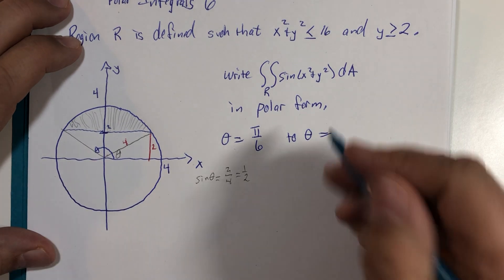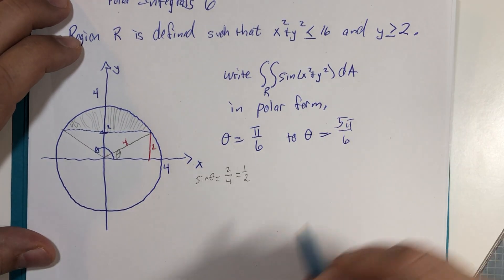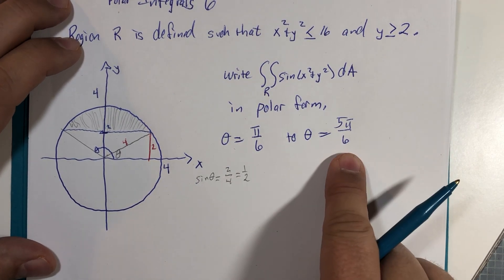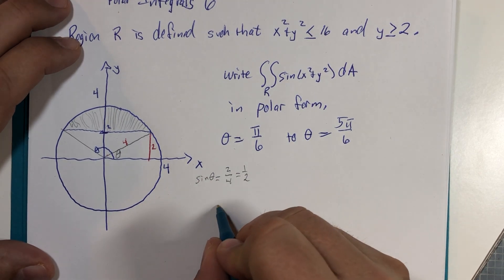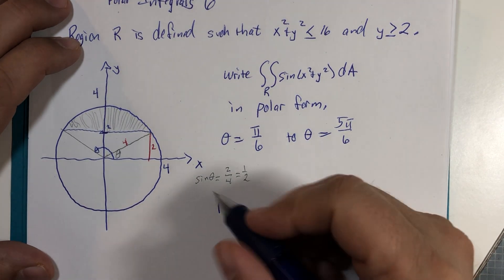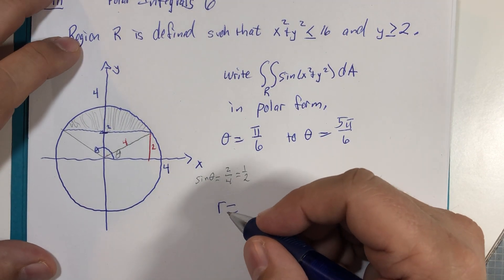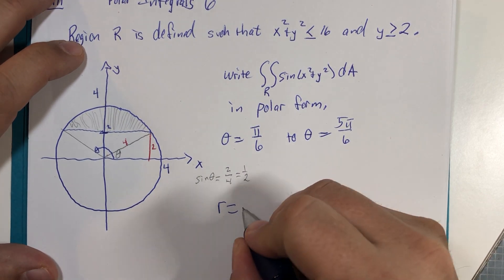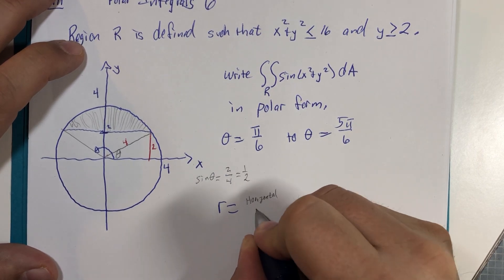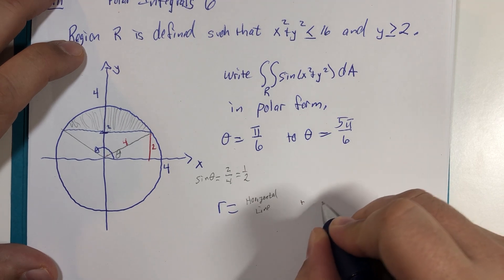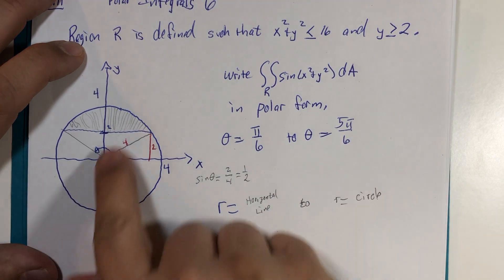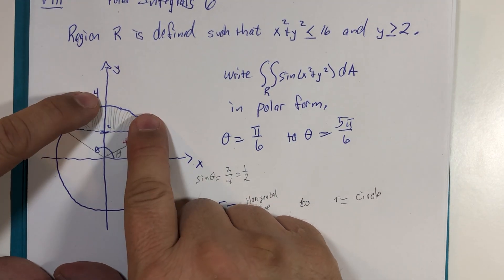The r boundaries are going to go from—again, using similar vocabulary to what I'm doing before—between a horizontal line and circle. The closer boundary is the line, the farther boundary is the circle.